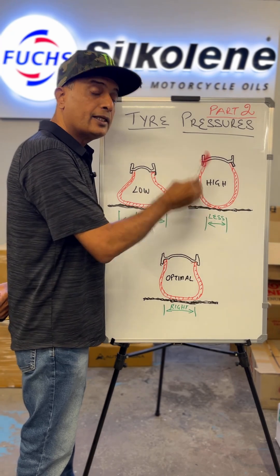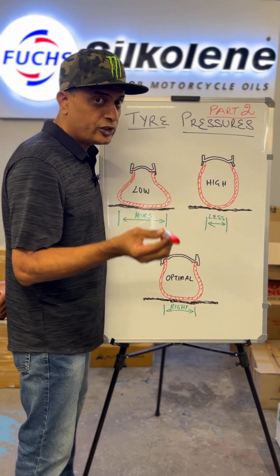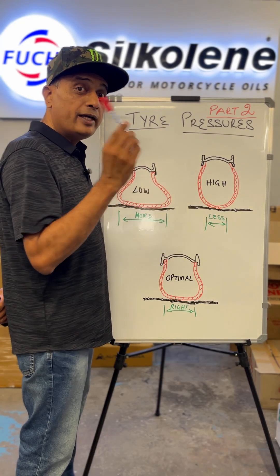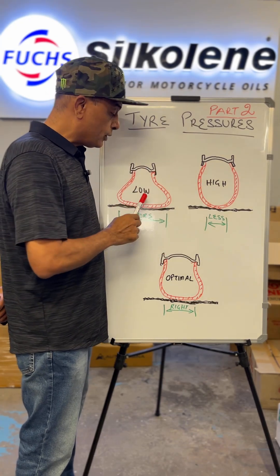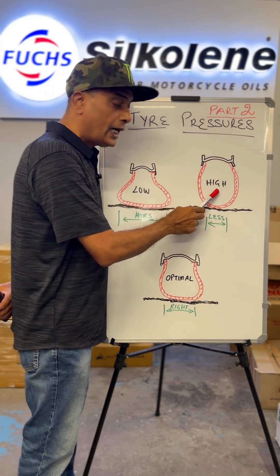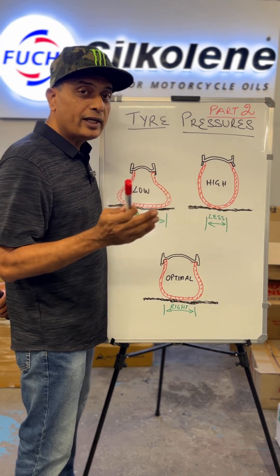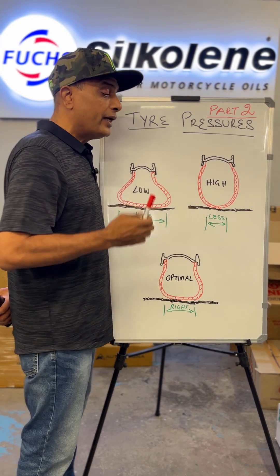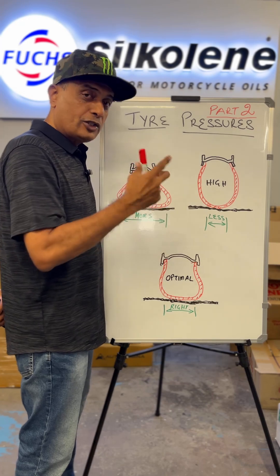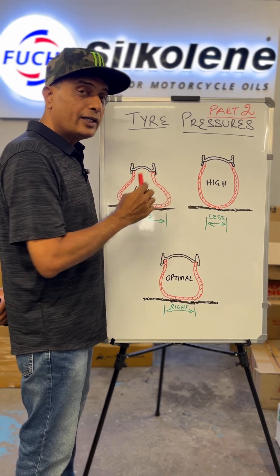That is the reason why low tire pressure is more dangerous than high tire pressure. While maintaining optimal pressure is most important, you should be more worried about a low tire pressure than a high tire pressure.